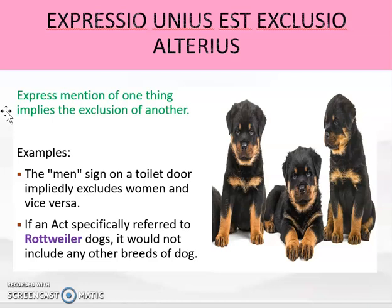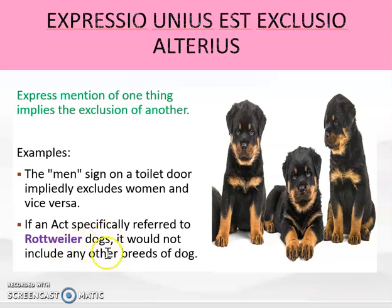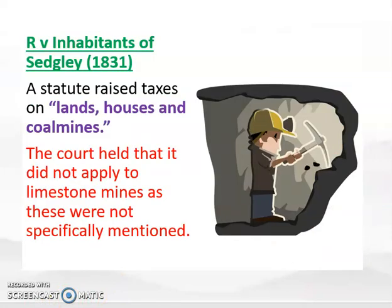A classic example of Expressio Unius is when you go to the toilets in a public place — the 'Men' sign on a toilet door impliedly excludes women and vice versa. The sign doesn't need to say 'Men, No Women'; just the fact that it says 'Men' implies that nobody other than men can go inside. Similarly, if an Act specifically referred to Rottweiler dogs, it wouldn't include any other breeds. Expressio Unius works like a complete list: anything not in the list is not included.